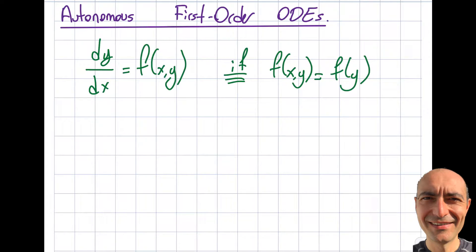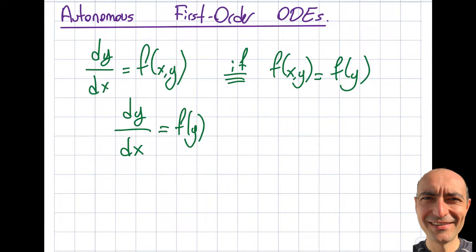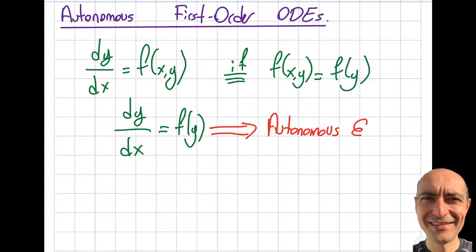So basically, if I have dy/dx equal to f(y) — with no x present on the right-hand side — I'm missing the independent variable. This type of equation is simply referred to as an autonomous equation, or autonomous differential equation.